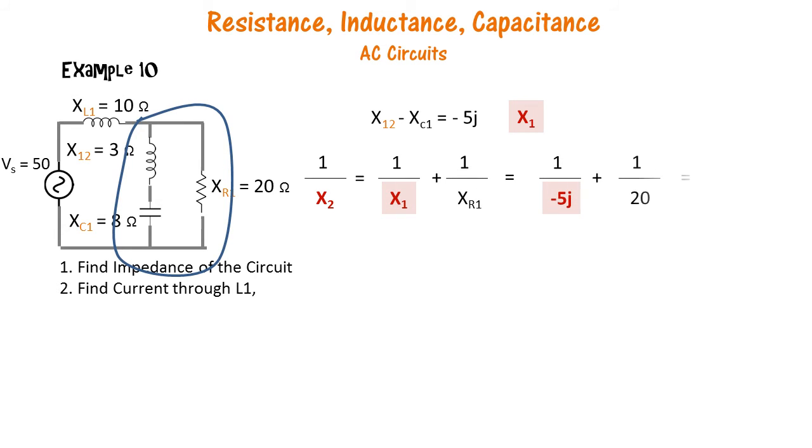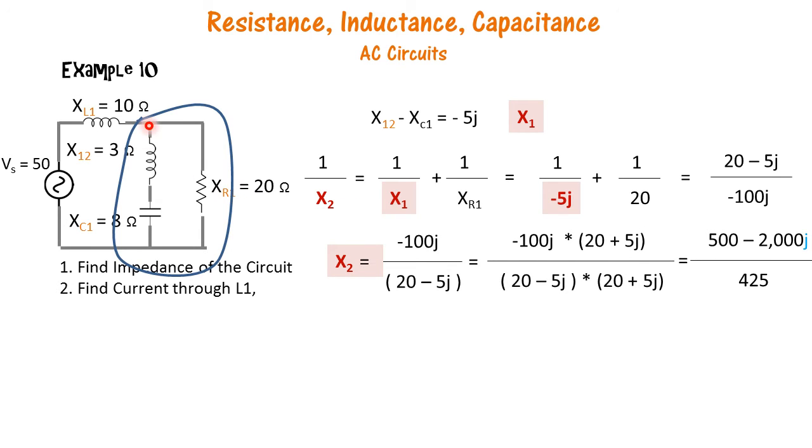So like in parallel capacitors, we have 1 by x2 is equal to 1 upon x1 plus 1 upon xr1, and we do a lot of mathematics to simplify and find x2.